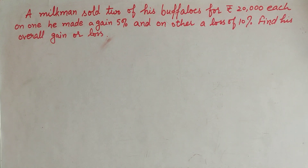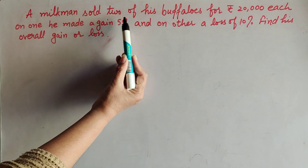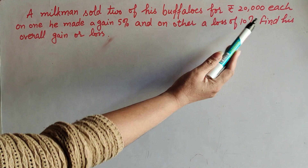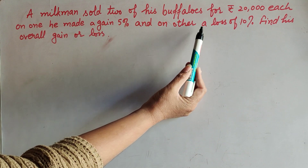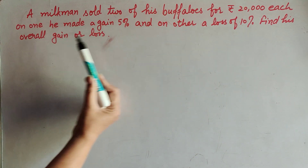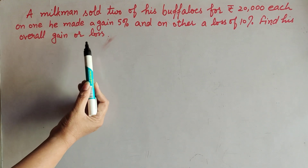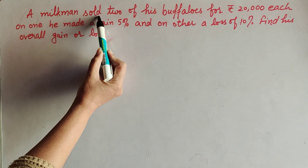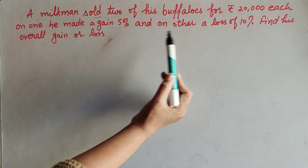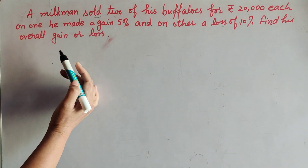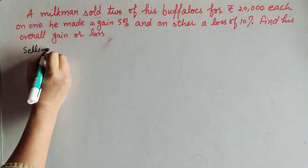Hello friends, welcome to my channel. In this video we discuss: a milkman sold two of his buffaloes for rupees 20,000 each. On one he made a gain of 5% and on the other a loss of 10%. We need to find his overall gain and loss. To find overall gain and loss, we need to find the cost price, given that selling price, gain percentage, and loss percentage are known.